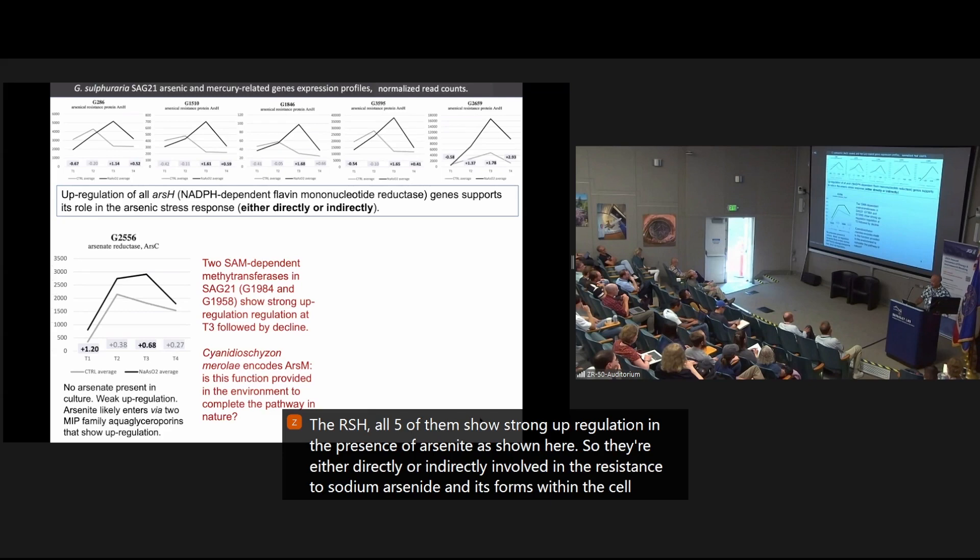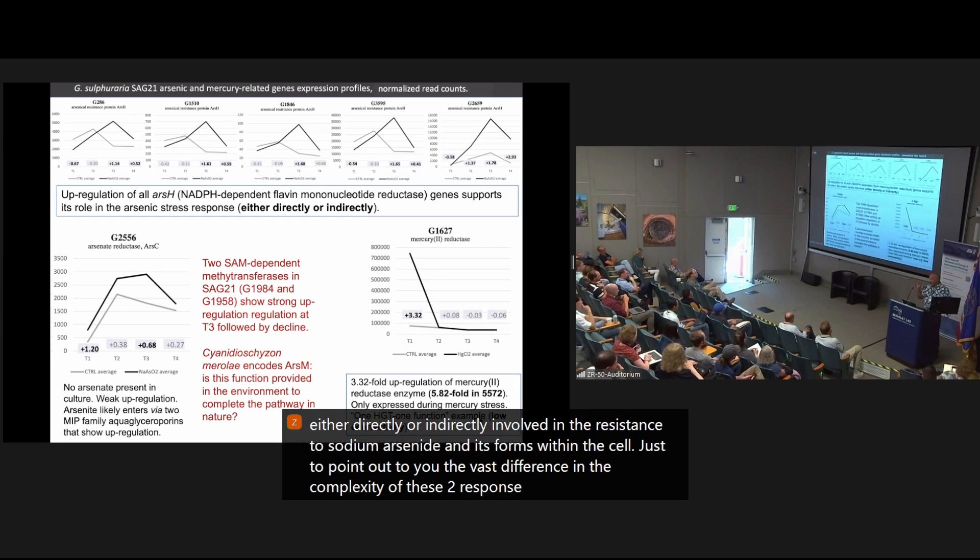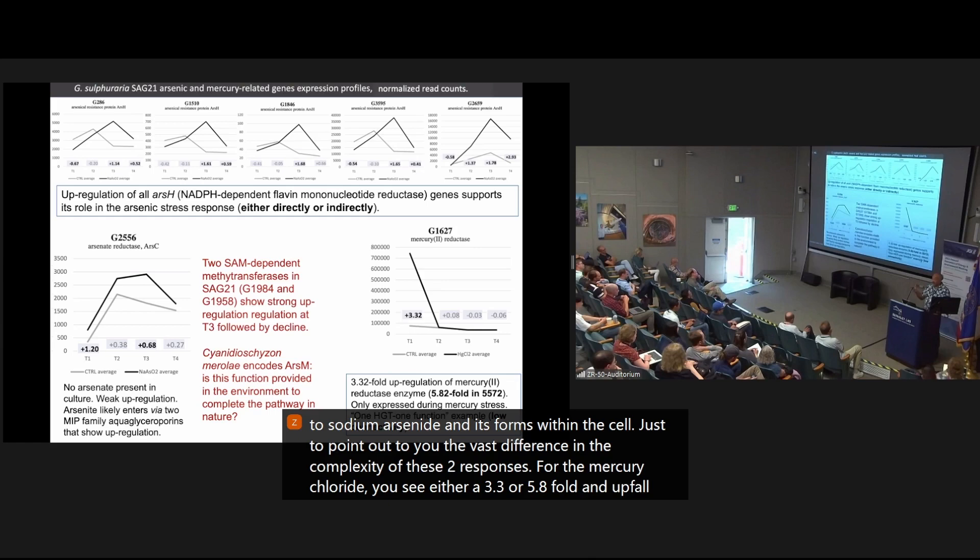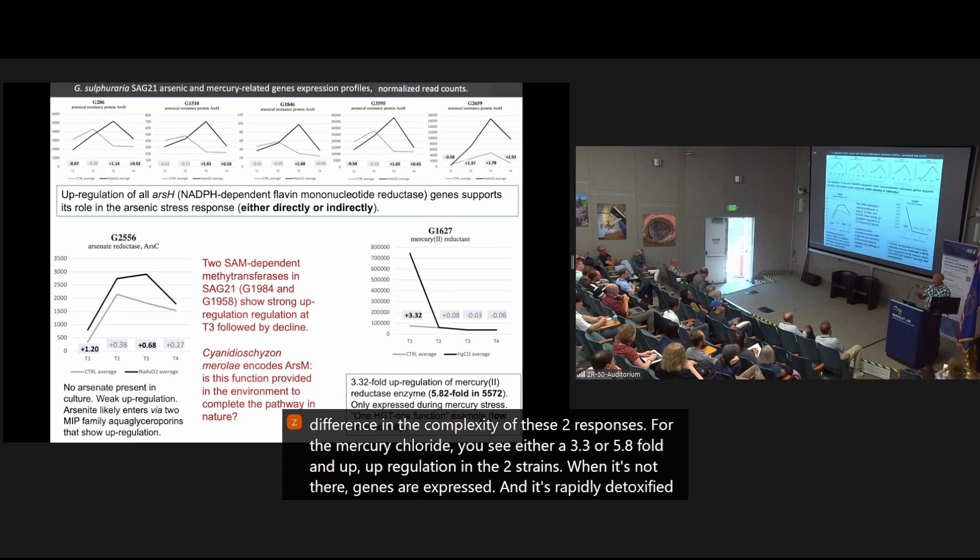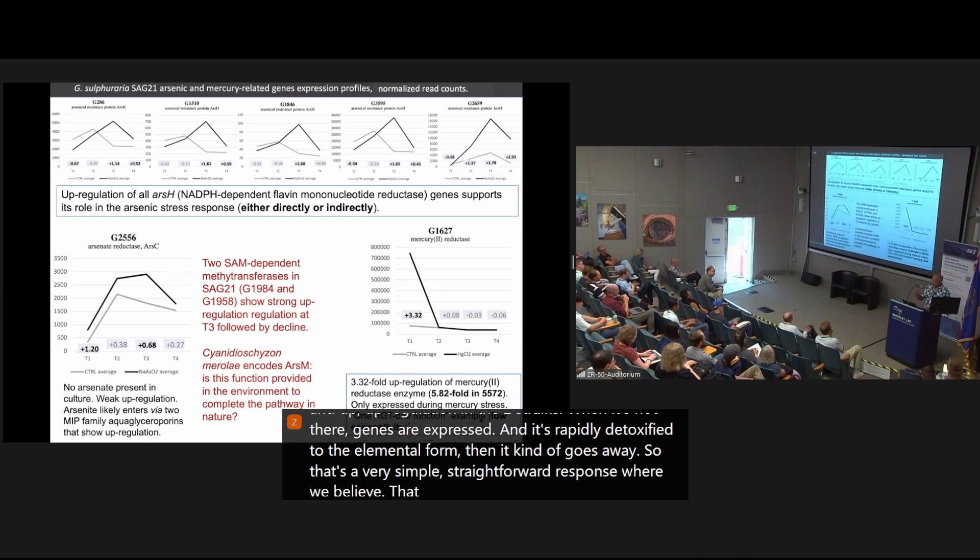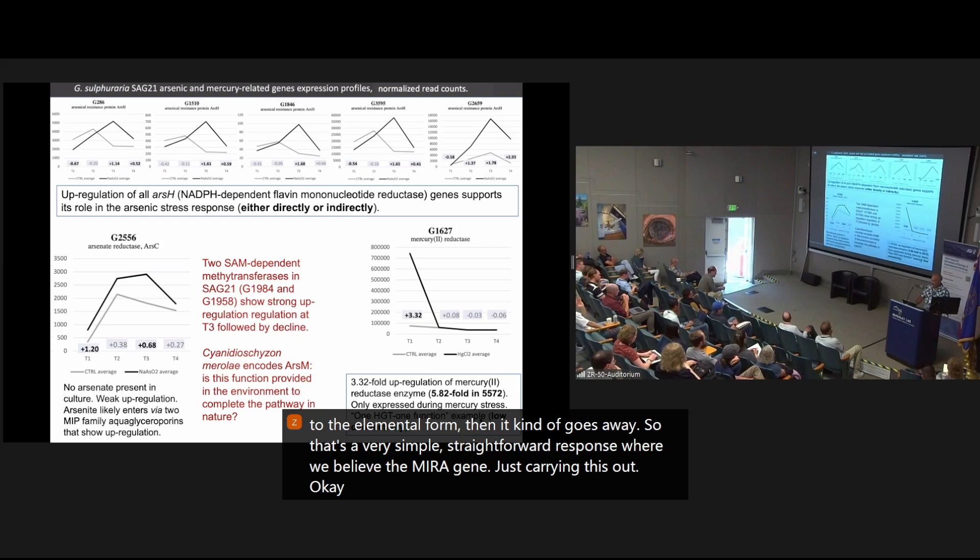Just to point out to you the vast difference in the complexity of these two responses, for the mercury chloride, you see either a 3.3 or 5.8-fold upregulation in the two strains. When it's not there, gene's not expressed, and it's rapidly detoxified to the elemental form, then it kind of goes away. So that's a very simple, straightforward response where we believe the MerA gene is carrying this out as shown here. So here's the hypothesis.